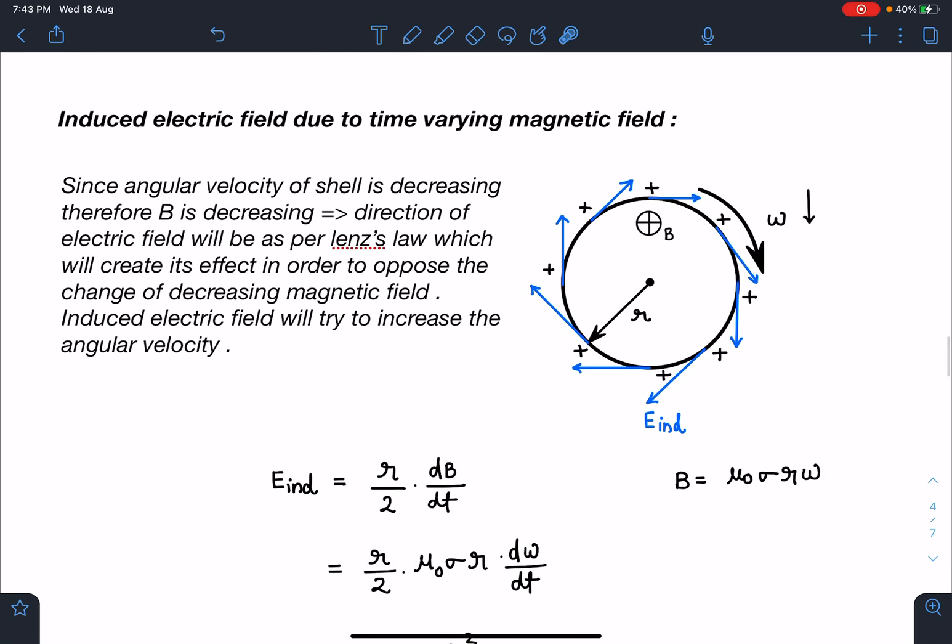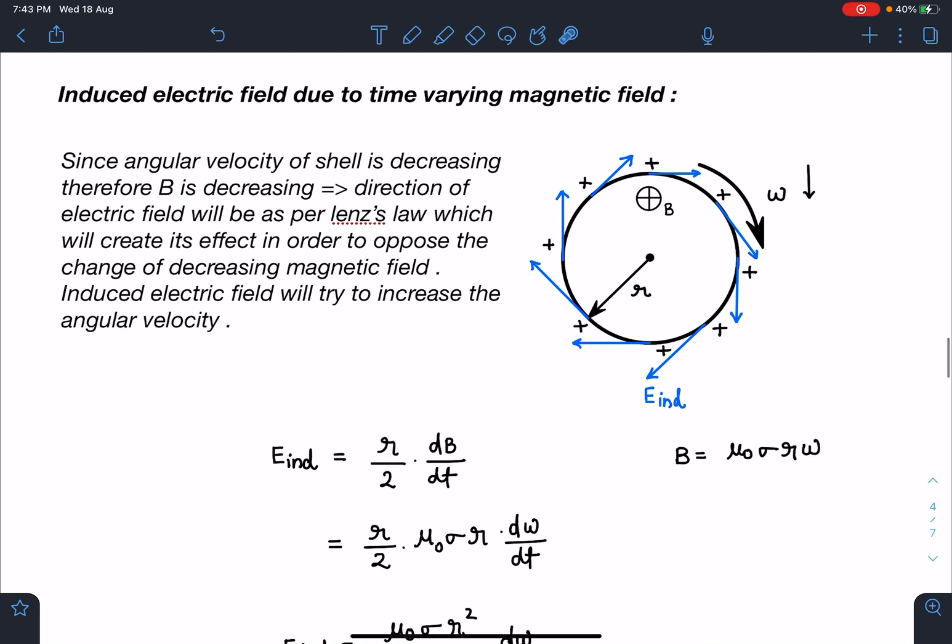The third part: since omega is changing with time, this will create induced electric field. Let's find out torque due to induced electric field. Due to viscous force, omega should have decreased. If omega is decreasing, the electric field created will be created in such a way that it will try to oppose the change - this is the basic application of Lenz's law.